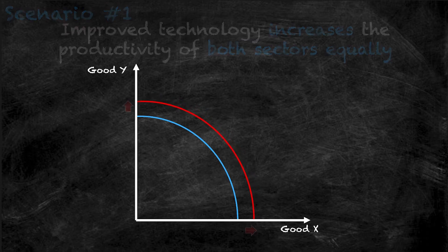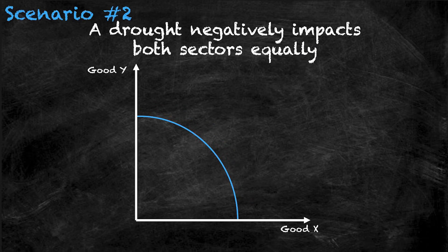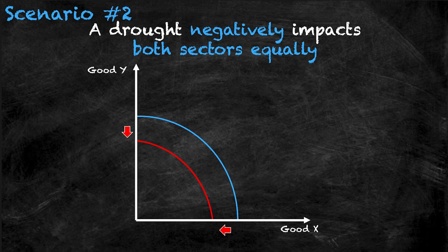Let's move on to scenario number two. Scenario two: a drought negatively impacts both sectors equally. A drought is clearly a negative shock, so the PPF is going to shift to the left. Once again, both good y and good x sectors are impacted equally, so both the x and the y-intercepts have moved towards the origin by the exact same amount. Due to the drought, the economy can now make less of both good x and good y.